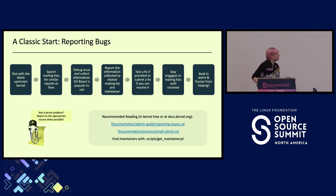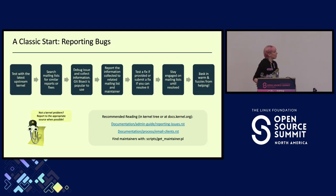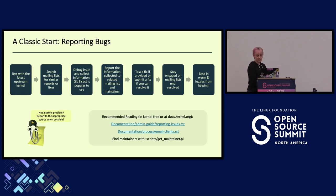The initial part to getting involved is reporting bugs. If you encounter an issue, the first thing to do is check that you're testing with the latest kernel — the issue may have already been fixed. Also check the mailing lists before submitting something; most of the time something has already been reported. If you cannot find a solution, debug the issue if you're able to, write a git bisect if you know a last known good point, and send as much information as you can with your bug report.